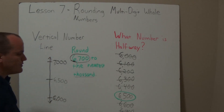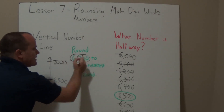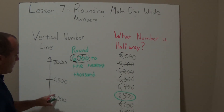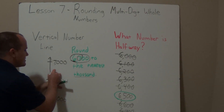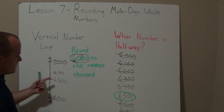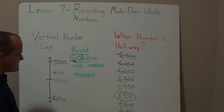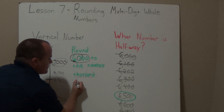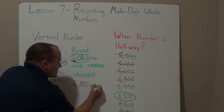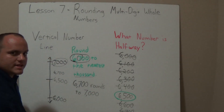I've got my vertical number line set up: 6,000 to 7,000 with the midway point at 6,500, because I'm rounding to the nearest thousands place. I look back at my original number, 6,700, and look at the hundreds digit — that's 7. Counting from 6,000 up to 6,700, I place it on the number line. Is it closer to 7,000 or 6,000? It's a long way from 6,000 but only a short distance to 7,000. So 6,700 rounds to 7,000.